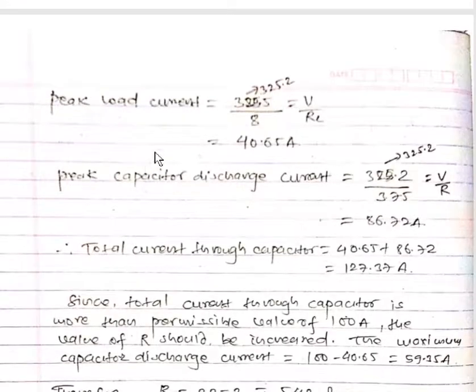Now we have to calculate the peak load current. For peak load current we have V upon RL. We calculated V as 325.2 and RL is 8, so 40.65 ampere.